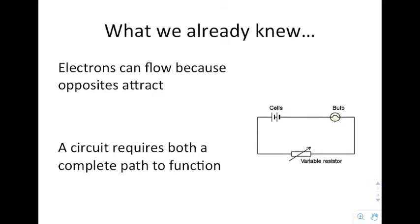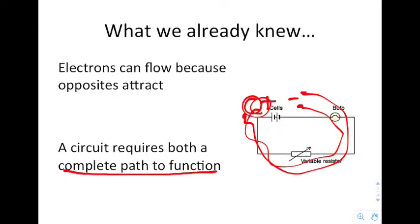So here's what we already knew. We know that electrons can flow because opposites attract. We talked about that in the first presentation, how you have something that's a positive charge and it wants to get to the negative side, or vice versa. And you also know that a circuit requires a complete path to function and a voltage source. So you need both of those things in order for this to work.